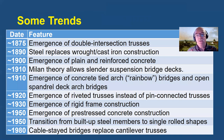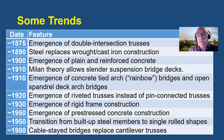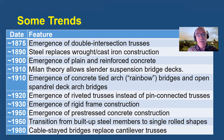Some of the trends that we might expect to see are steel replacing wrought iron and cast iron construction around 1890. The details of a wrought iron structure and a steel structure look similar, but the underlying material is different. We might expect the emergence of pre-stressed concrete construction in the 1950s to yield more slender pre-stressed bridges than reinforced concrete bridges. And we might expect to see a transition in the 1980s where cable-stayed bridges are replacing cantilever trusses.